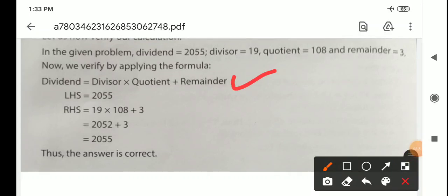That is, dividend equals divisor multiplied by quotient plus remainder. This is known as LHS side, and this is known as RHS side. LHS means left hand side, RHS means right hand side. Then comes to RHS side.